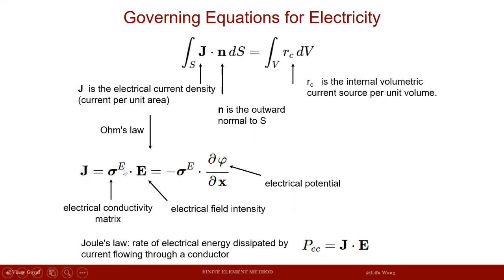If you have a very low electric conductance, you may not have the ability to conduct electricity as efficiently, and this term accounts for that. The dot product of these two matrices provides the electrical current density. E is expressed in terms of electric potential, which can be related to the electrical field intensity through this equation.